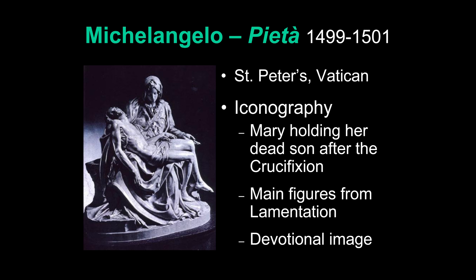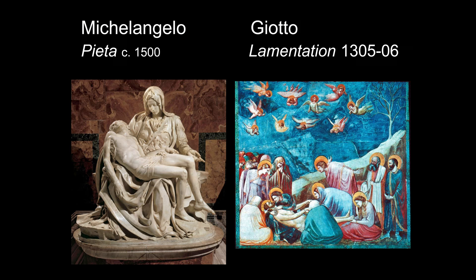The Pietà is essentially excerpted from a lamentation. Here we see a lamentation fresco about 200 years older than Michelangelo's Pietà, by the famous Florentine artist Giotto. It gives a good example of a lamentation over the body of Christ — this is a narrative scene in a whole series of pictures showing the life of Christ. You have Christ lying across the lap of his mother, Mary embracing him, Mary Magdalene at his feet, Saint John leaning over, and Joseph of Arimathea and Nicodemus present.